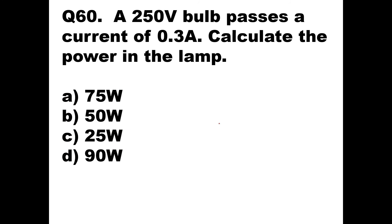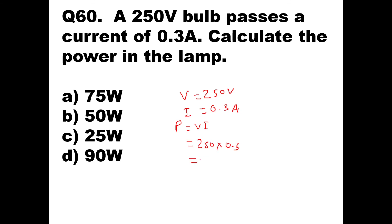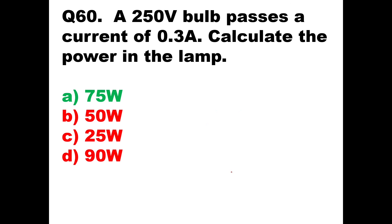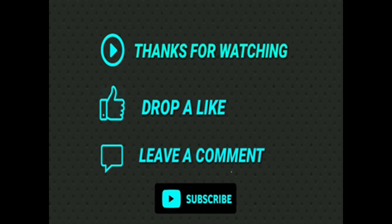Question 60: A 250 volt bulb passes a current of 0.3 ampere — calculate the power. Voltage is 250 V and current is 0.3 A, so P = V × I = 250 × 0.3 = 75 watts. Option A — 75 watts — is the answer. These were another 20 questions on series-parallel combination of resistance and definitions of energy and power. In my next video I'll take another 20 questions on the next topics. Thank you.